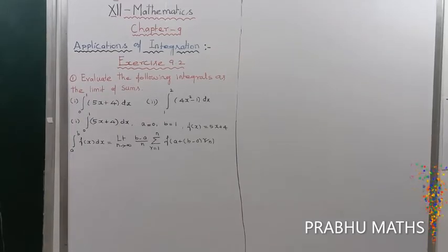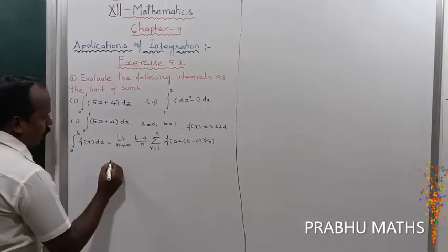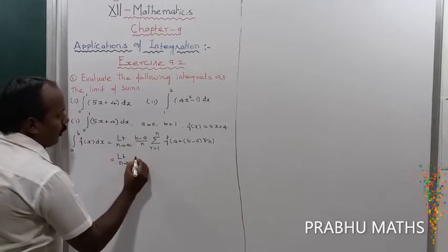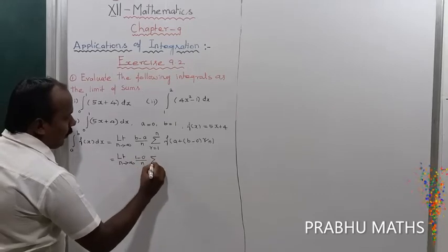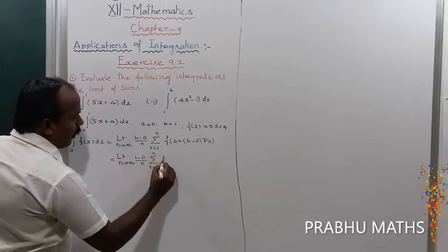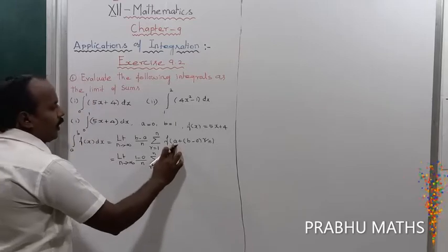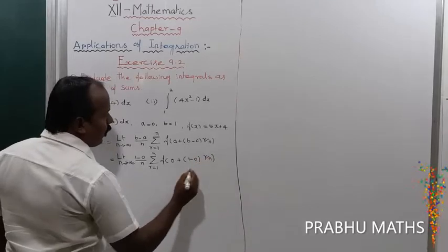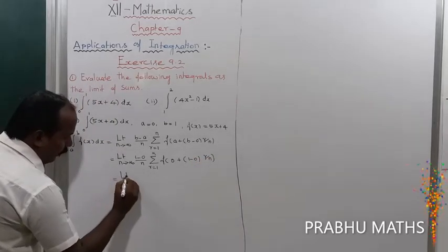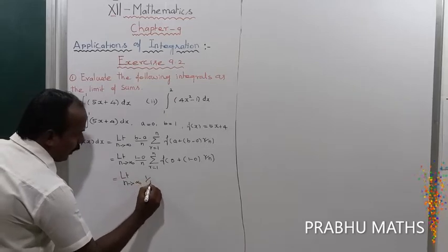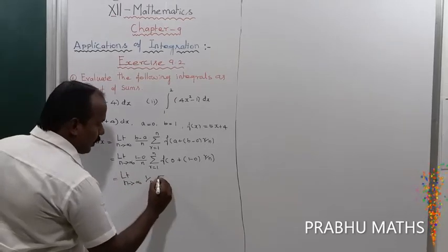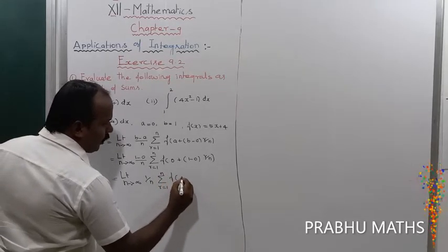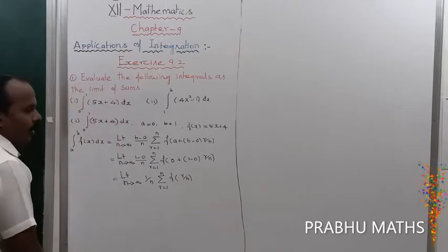Applying the formula: limit as n tends to infinity of (1 minus 0) by n, times summation of r from 1 to n of f(0 plus 1 by n times r), which equals limit as n tends to infinity of 1 by n, times summation of r from 1 to n of f(r by n).